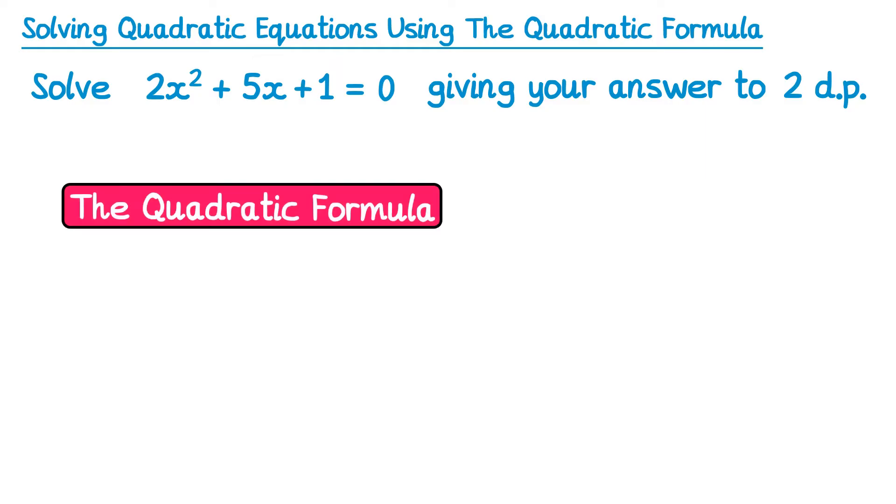The quadratic formula is given by x equals negative b plus or minus the square root of b squared minus 4ac, all divided by 2a. Now this is a formula that you'll need to memorize for your exams, it won't be given to you.